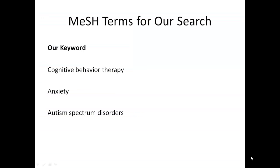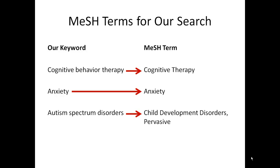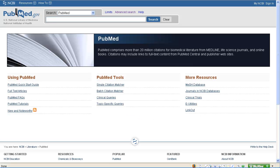We've already done step one of a MeSH search. In the previous tutorial, we identified the MeSH terms that are probably the best matches for our topics: Cognitive Therapy, Anxiety, and Child Development Disorders Pervasive. Now we need to tell PubMed to find articles that have been tagged with all three of these MeSH terms. To do this, we need to add each MeSH term to a PubMed article search. We can go to the MeSH database to begin.